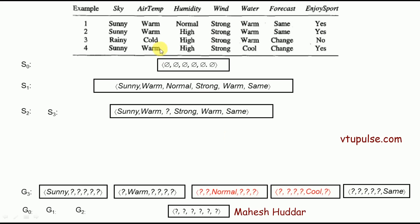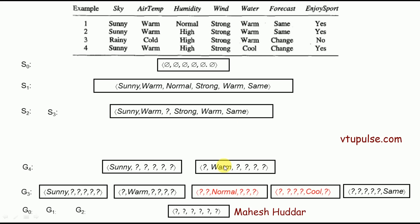The last example is a positive example. We go to the generic boundary and retain all hypotheses consistent with the fourth example. The first hypothesis — sunny, question mark — matches sunny and all question marks match perfectly: positive classification, expected positive, so we retain it. The second hypothesis — question mark, warm — question mark matches sunny, warm matches warm, remaining question marks match: consistent, retained. The third hypothesis — five question marks, same — same does not match change in example 4, giving negative classification while expected is positive, so we remove it.